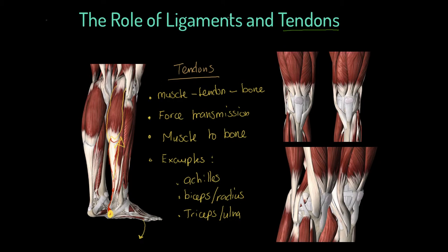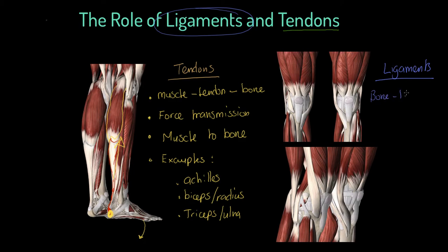I want to focus our attention now on ligaments. You might be thinking about these somewhat interchangeably with tendons, but they are not the same. You may have studied that ligaments are there to stabilise joints — I really want to drill that point home. They connect from bone to ligament to bone, so we could simply say they connect bone to bone.